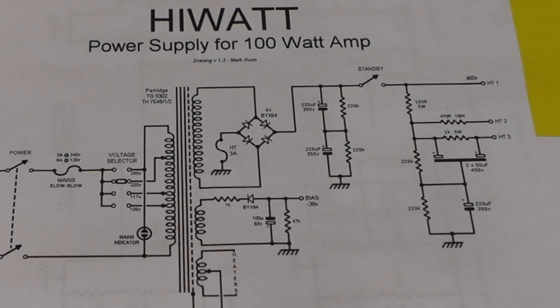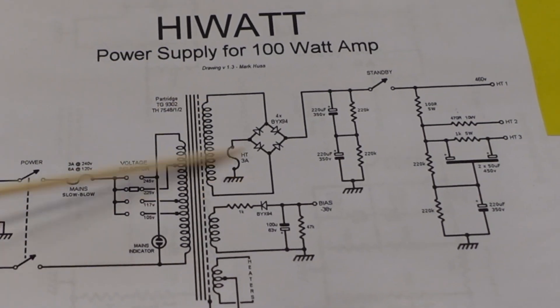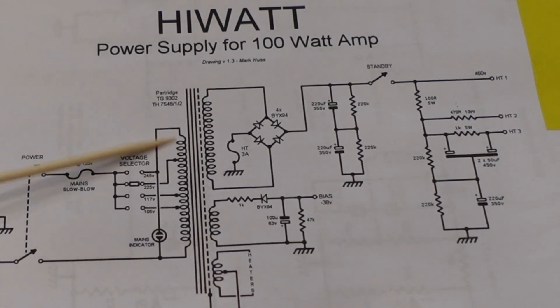We can't forget the bridge rectifier portion of the power supply. When the high voltage side of the secondary is energized, it's still AC.